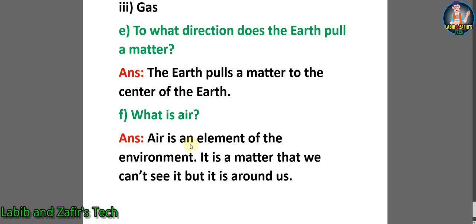Question F: what is air? Answer: air is an element of the environment. It is a matter that we cannot see, but it is all around us.